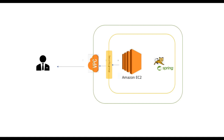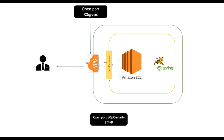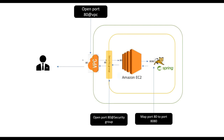In order to allow end users to use your Spring Boot application, you have to ensure that port 80 is open at the VPC level. If you are using the default VPC, that is already taken care of. You also need to open port 80 at the security group level, and then finally you need to map port 80 of your EC2 instance to port 8080, because Spring Boot by default runs on port 8080. If you don't map port 80 to 8080, requests will not reach your application and will always be declined.